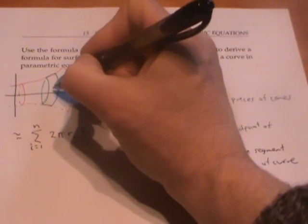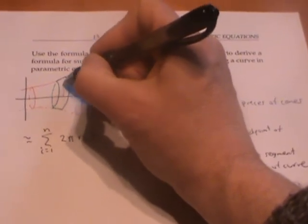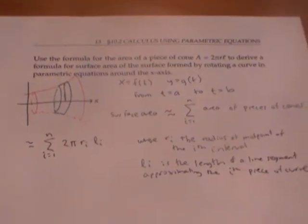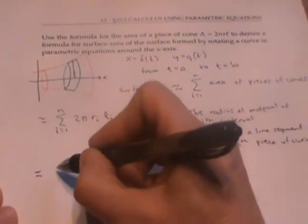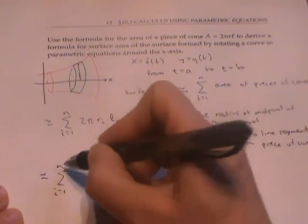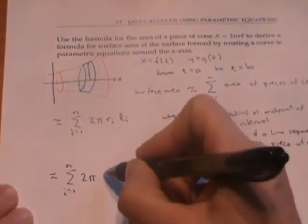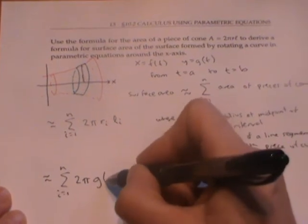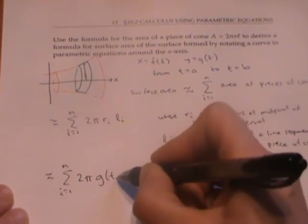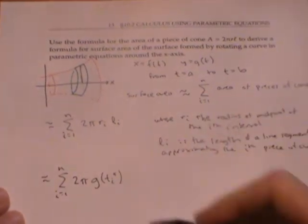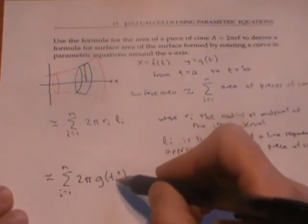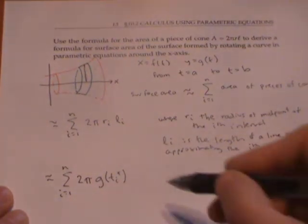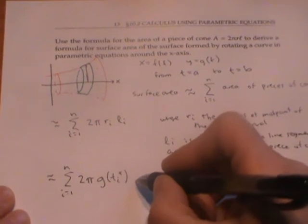Well, since my radius here is just the height of my curve, or the y value of my curve, I can rewrite this as 2π times my y-value, which is g(t). Let's call it g(t_i*) for some point t_i* in the i-th interval. That's my radius.